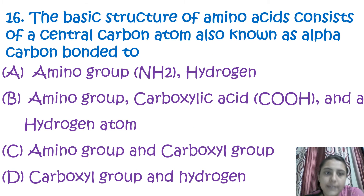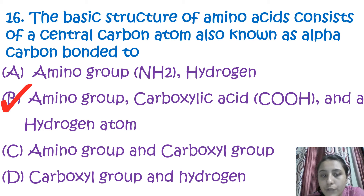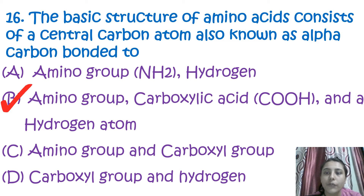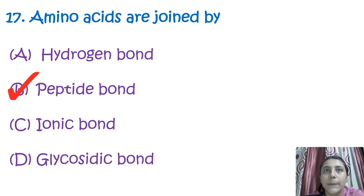The next question is: the basic structure of amino acids consists of a central carbon atom, also known as the alpha carbon, bonded to what? The correct answer is an amino group, a carboxyl group, and a hydrogen atom. Amino acids are joined together by peptide bonds.